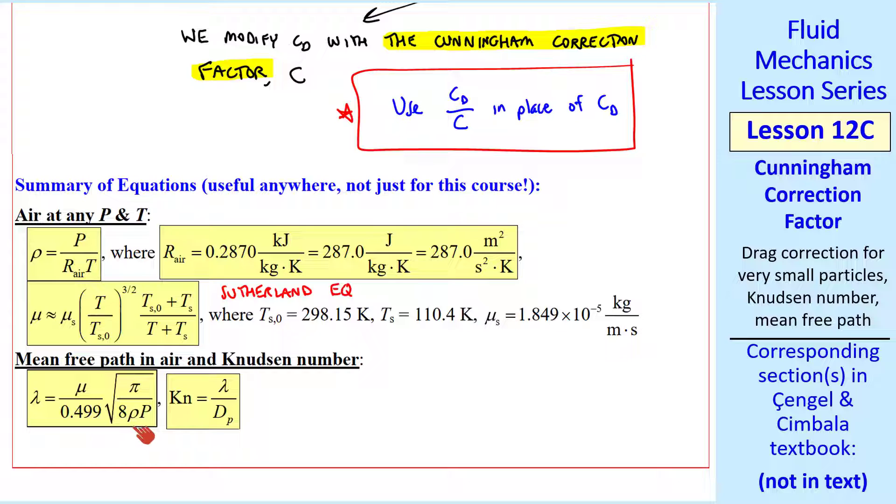And notice that we need mu, density, and pressure, to calculate lambda. And we need lambda, then, to calculate the Knudsen number.